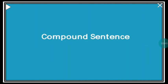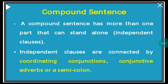Now we have finished with what a simple sentence is. We go on to see what a compound sentence is. A compound sentence has more than one part that can stand alone — that means it has two independent clauses. Independent clauses are connected by coordinating conjunctions, conjunctive adverbs, or a semicolon. These are the three important things to keep in mind.